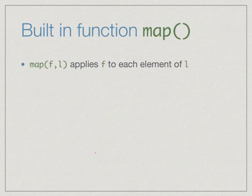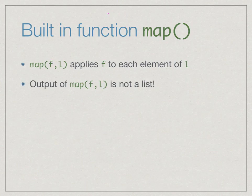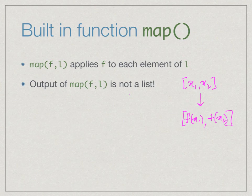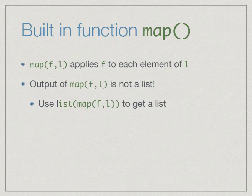Python has a built-in function map which does precisely this — map(f, l) applies f in turn to each element of l. Although you would think that if you take a list x1, x2 and apply map you get f(x1), f(x2), and the output should be another list, unfortunately in Python 3 — and this is another difference between Python 3 and Python 2 — the output of map is not a list. So you need to use the list function: list(map(f, l)) to get a list.